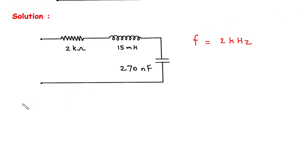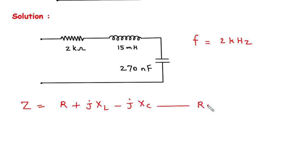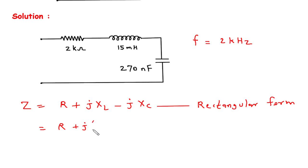The total impedance Z is equal to R plus jXL minus jXC. This is the rectangular form. The value of XL will be 2πFL and XC is 1 upon 2πFC.